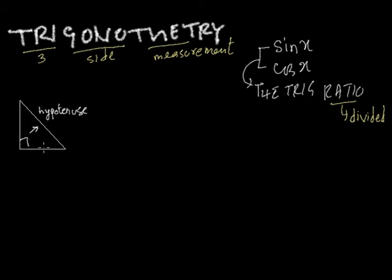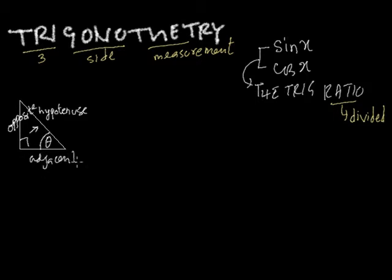There are two other sides, and their names depend on a reference angle. For example, if we refer to an angle called theta — theta is a Greek letter used as a pronoun for any angle — then the side opposite to theta is called the opposite, and the side next to theta is called the adjacent.